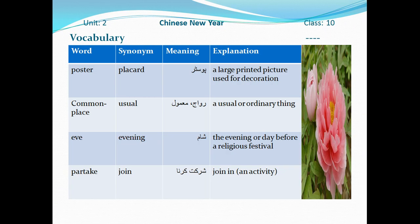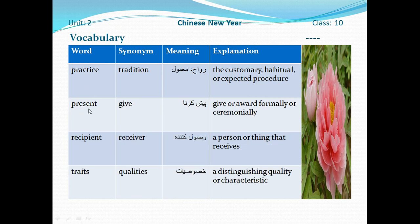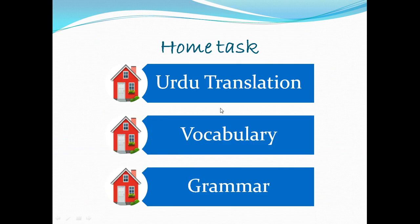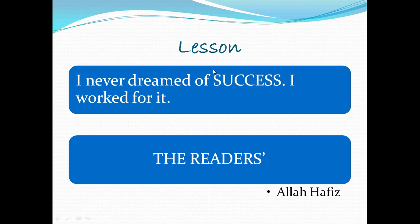Ab hum in paragraphs ki vocabulary dekhenge. Poster — synonym: placard, meaning: poster. Common place — synonym: usual, meaning: riwaj ya maamool. Eve — meaning: sham ya mauqa. Partake — synonym: join, meaning: shirkat karna. Practice — synonym: tradition, meaning: riwaj. Recipient — synonym: receiver, meaning: wasool kunnindah. Traits — meaning: qualities, khasusiyaat. Aaj ka lesson yahan khatam hota hai. 'I never dreamed of success, I worked for it' — main ne kamyabi ke mahaz khwaab nahi dekhe the, balke main ne uske husool ke liye mehnat ki thi. Thanks a lot, Allah Hafiz.